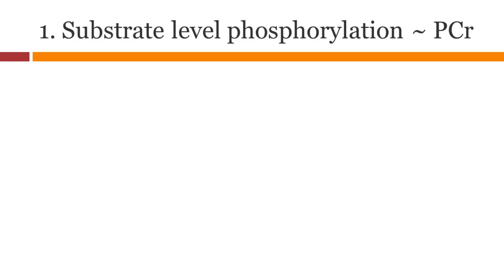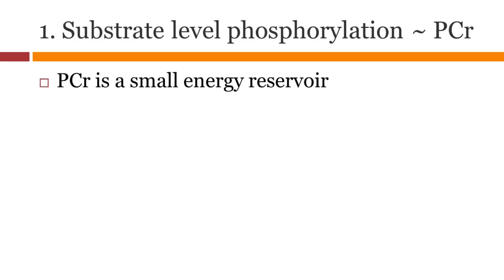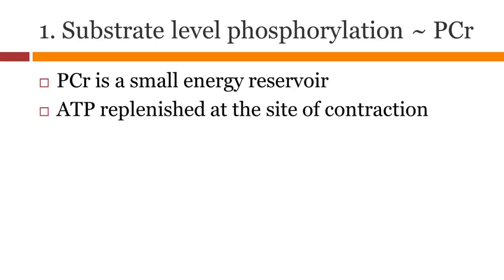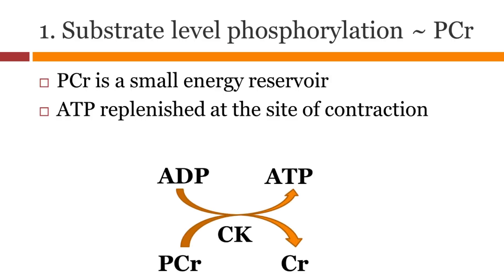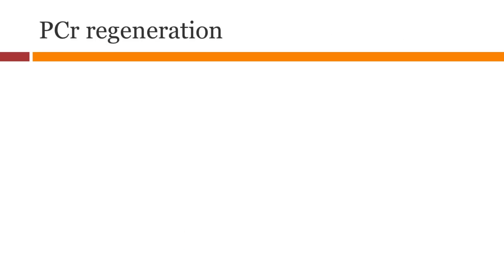Phosphocreatine is a small reservoir which helps regenerate ATP in the muscles. Phosphocreatine is broken down to creatine, which releases energy. This energy is coupled to regenerate ATP from ADP. This reaction is facilitated by an enzyme called CK, which stands for creatine kinase. Phosphocreatine is regenerated through the creatine kinase associated with mitochondria.